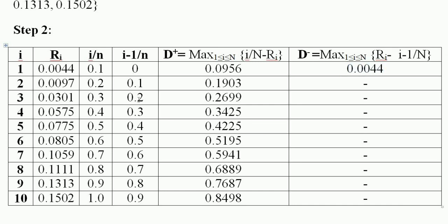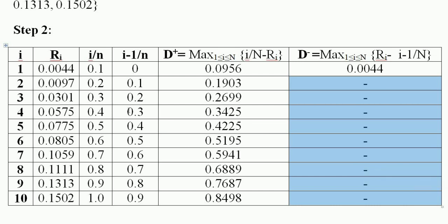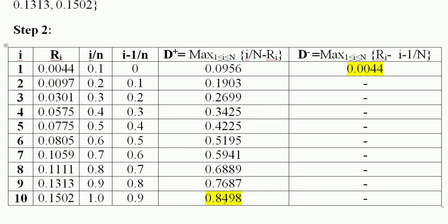If we get a negative value it is less than the first value, so we don't consider it further. Calculating 0.0301 − 0.2, 0.0 − 0.3, and all remaining values also give negative results. By common sense, the maximum value of D− is the first value, which is 0.0044.